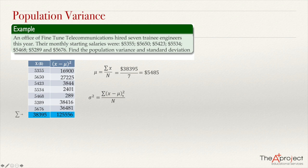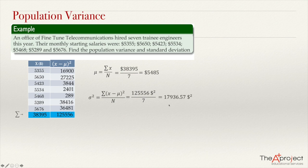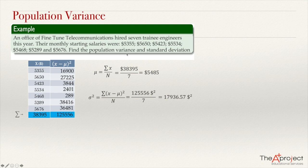This 125,556 is the numerator of our fraction. So the variance will be 125,556 divided by 7. The original unit was dollars, and when we square the differences the unit becomes dollars squared. Dividing gives us 17,936.57 dollars squared. These units are weird, but that is the population variance. We have now computed the population variance.